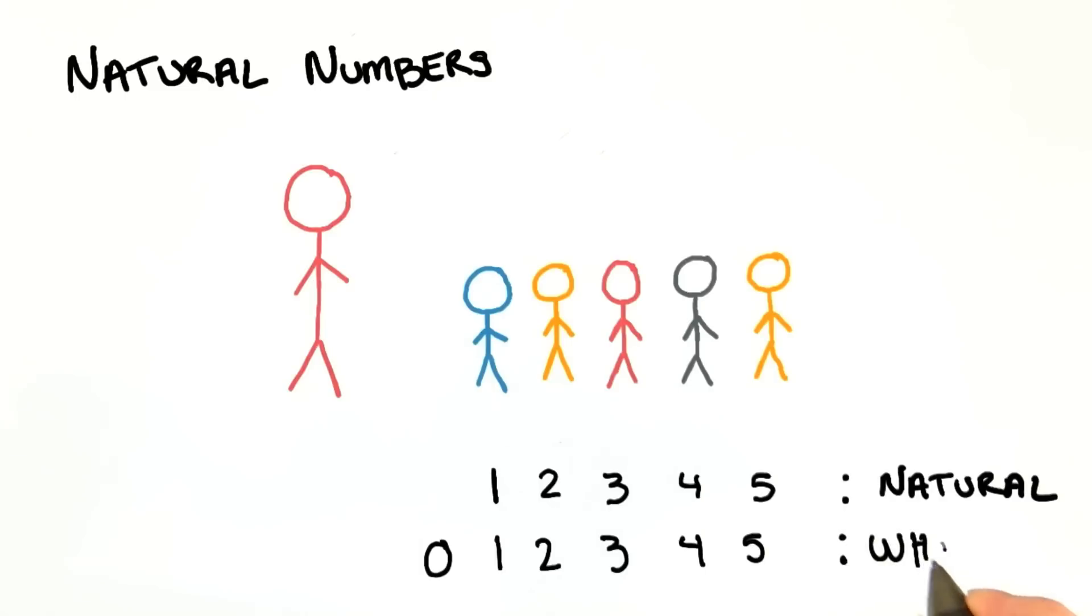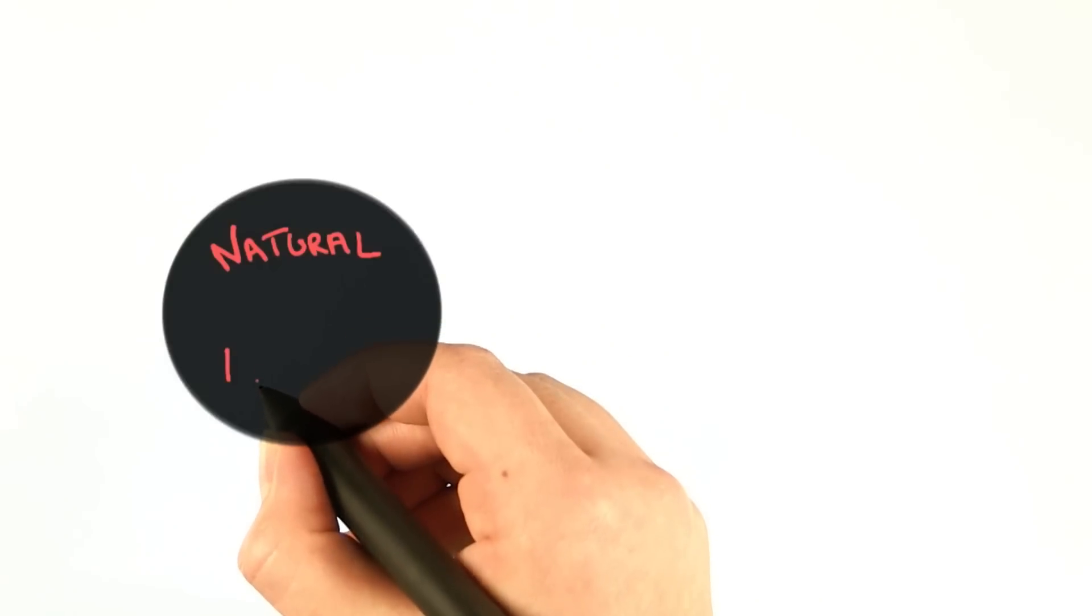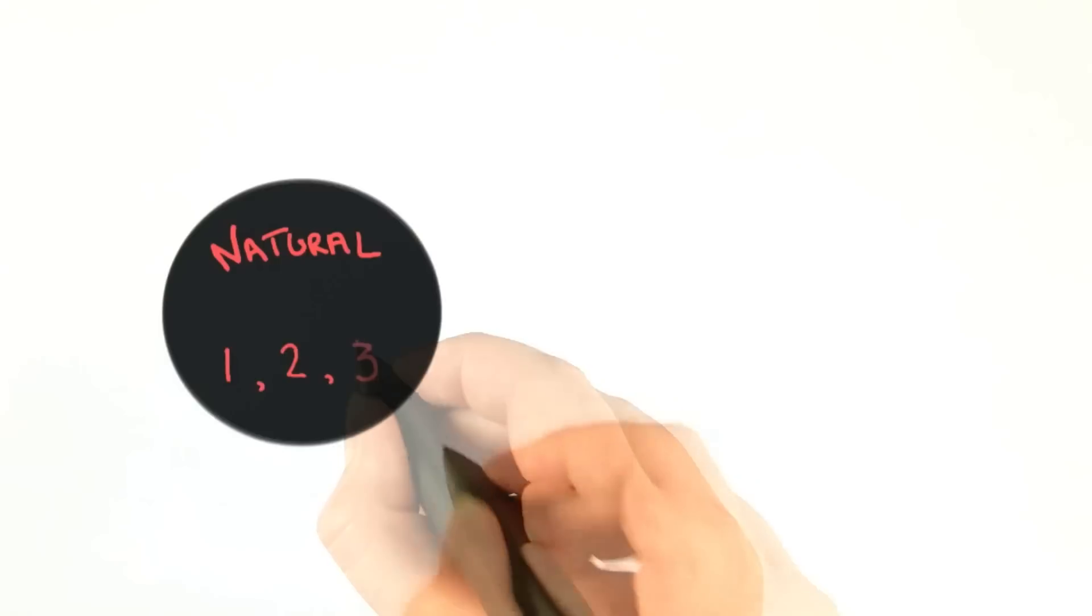So let's go over the two groups we have so far. First, we talked about the natural numbers, or the counting numbers, which are 1, 2, 3, and so on, all the way up to infinity.